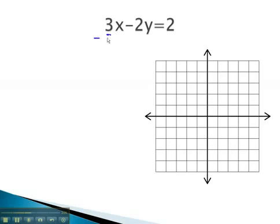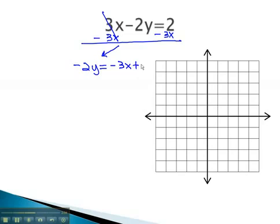We will do this by subtracting 3x from both sides. As we do, we have negative 2y equals... remember, on the right side, these are not like terms, so they cannot be combined... negative 3x plus 2.